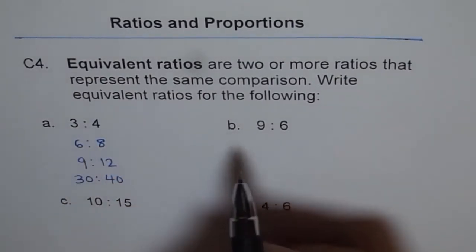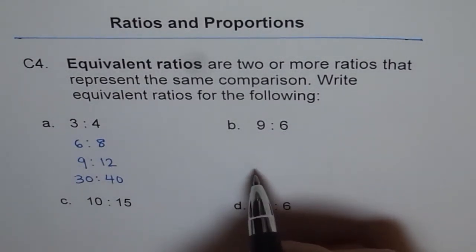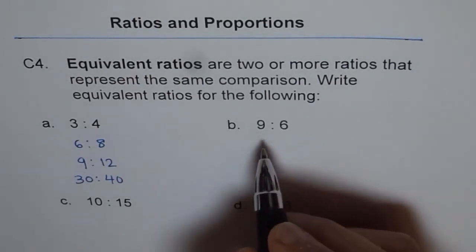Now here, B, 9 is to 6. We can sometimes divide by the same number. For example,